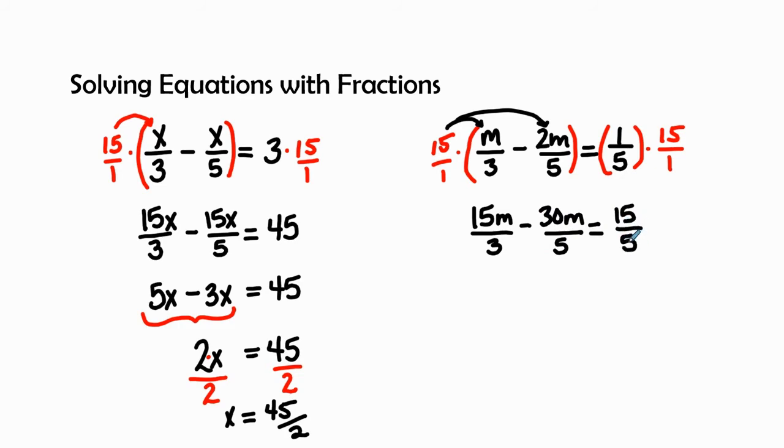You might ask yourself, what did I do different? I just got rid of the distributive property. Now let's simplify. 15m divided by 3 is 5m, minus 30m divided by 5 is 6m, and then 15 divided by 5 is 3.